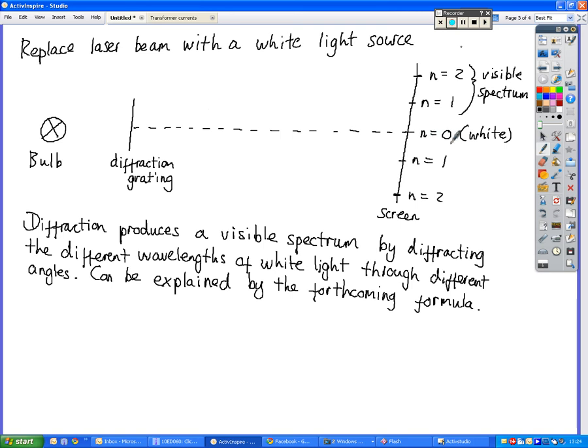In the middle we had a central fringe, a central maxima which was completely white, so the white light is passing straight through the middle of this diffraction grating. And then either side of that, we had two or three spectra, so running from red, orange, yellow, green, blue, and through to violet.